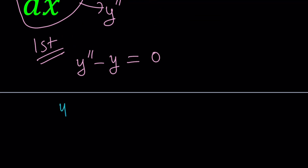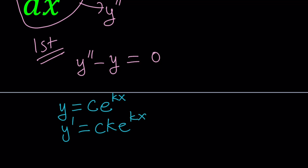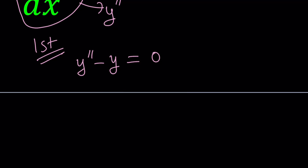Let's get to work. I'm going to assume that y can be written as c times e to the power kx. If you differentiate this expression once, you're going to get c times k times e to the power kx, because the k comes from the derivative of kx. And if you do that again, you're going to get c times k squared times e to the power kx. By substitution, you can plug this into the equation and solve for y values.